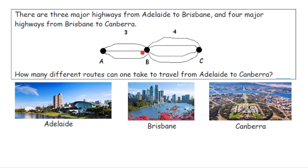If I choose to go on the second highway, we're going to have another four possibilities. And if we choose to go on that third highway, again there are four different possibilities. So if I have three choices to get to point B, and four choices to get to point C, altogether there are twelve different ways to go from point A to point C — twelve ways to get from Adelaide to Canberra.